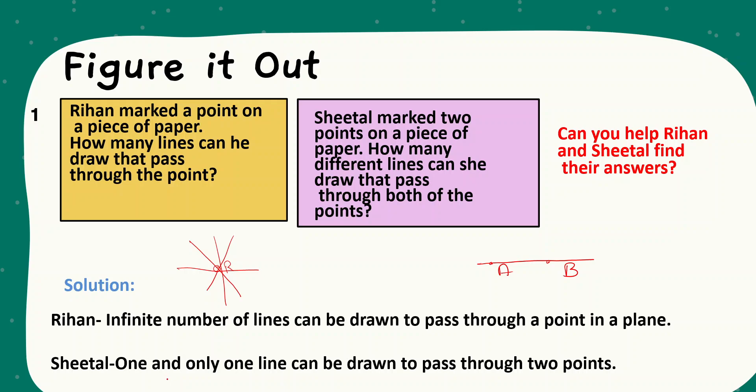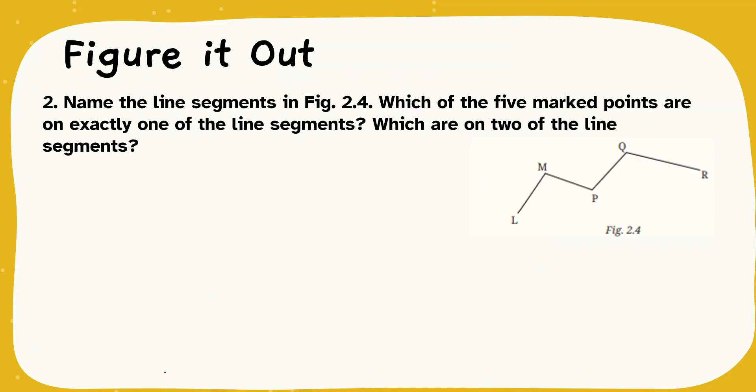Let us see question number two. Figure it out. Name the line segment in figure 2.4 which of the five marked points are exactly on one of the line segments. Which are on two of the line segments? We have to identify which are the line segments.